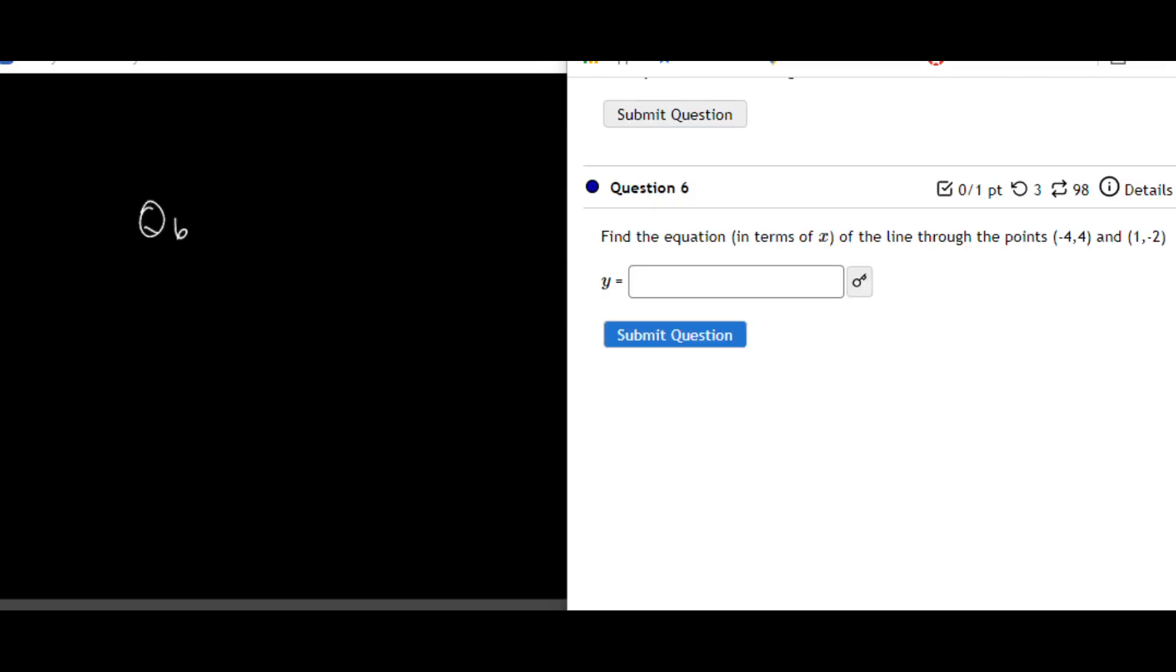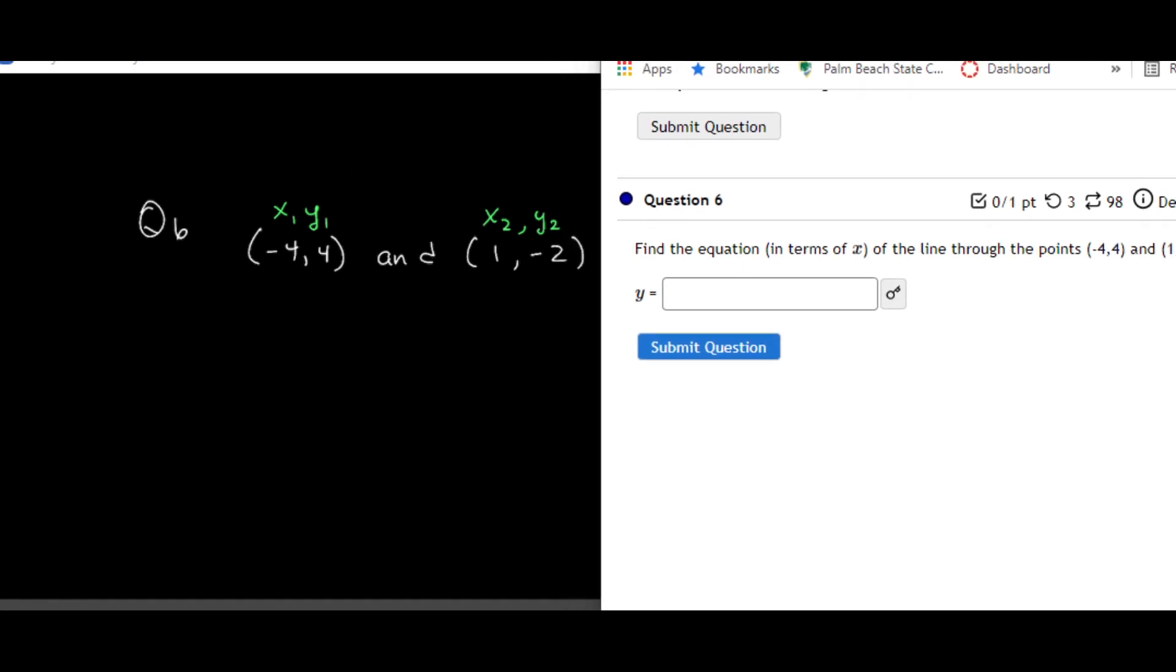So the next piece here, I have question 6. In terms of this equation, they're telling us the points here are negative 4, positive 4, and 1, negative 2. So first thing I'm going to do is label those. Again, I'm going to call this x1, y1, and my second point x2, y2. And again, you always have to make sure you label those as x's and y's and the points together. Now, the second thing that I want to do with this is to find the slope.